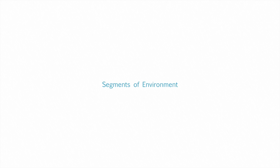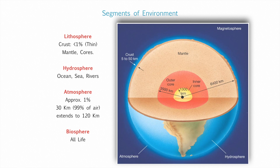What are the segments of environment? Environment is a very big thing and it is divided into different segments just to study it. The main segments are lithosphere, hydrosphere, atmosphere and biosphere. Lithosphere is related to all solid materials which includes crust, mantle, core and all other solid materials on earth. Hydrosphere is related to water — all things related to ocean, sea and river. Atmosphere is related to the gaseous state, extending up to 120 km from the surface of the earth and consisting of all the gases. Finally, biosphere is the segment of all living organisms including all life.